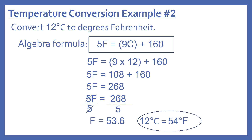We have to get F by itself, so we divide by 5. Remember in algebra: what we do to one side we do to the other. 5F divided by 5 leaves us with F, and 268 divided by 5 gives us 53.6. So the Fahrenheit degrees is 53.6, which rounds to 54 degrees — 12 degrees Celsius equals 54 degrees Fahrenheit.